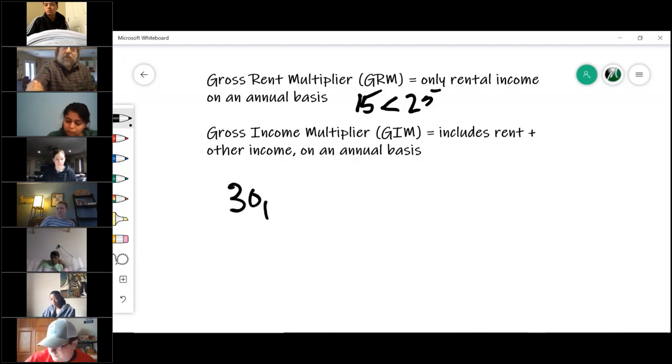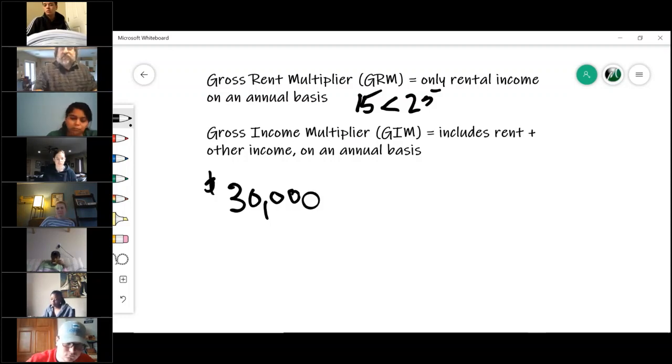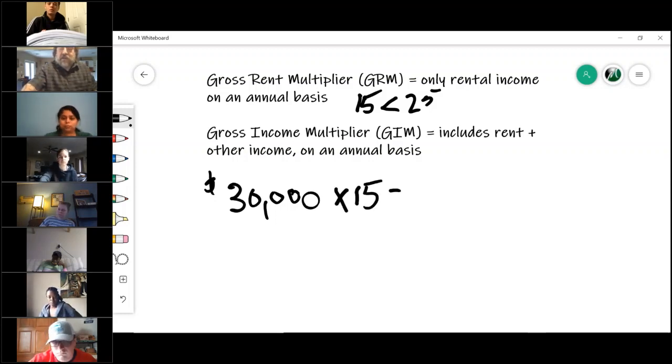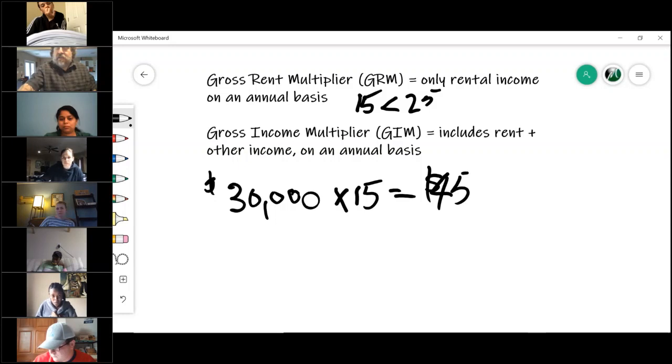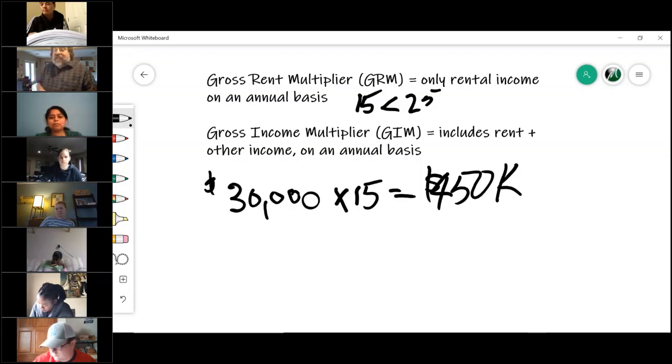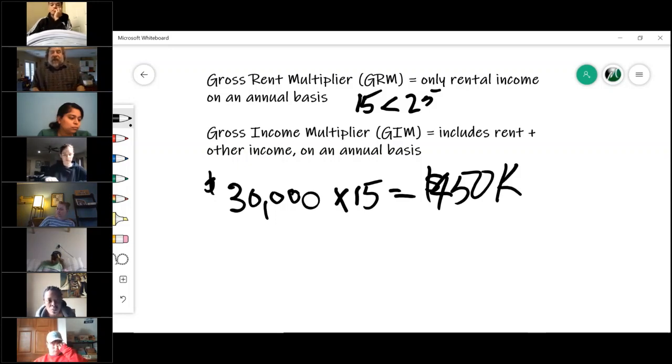All I can tell you is obviously 15 is less than 25, so 25 would be a better number. I don't know what they mean, so don't worry about that. But it literally is as easy as I just told you. That property a minute ago had $30,000 gross income. Now the key to this is that it is gross income before. Remember we used net income, now we are using gross income. And you would literally take it times the multiplier. 30,000 times 15, the value of this property is $450,000.